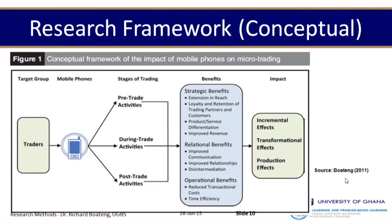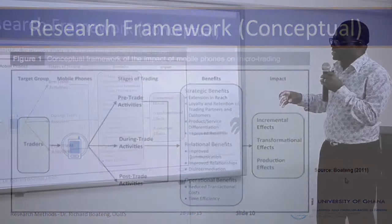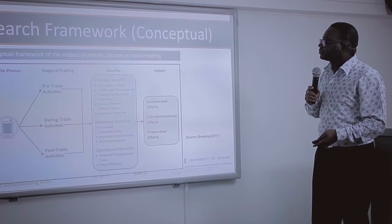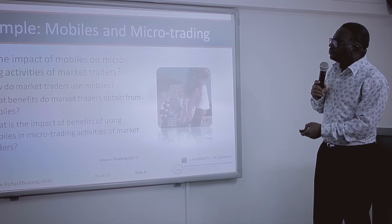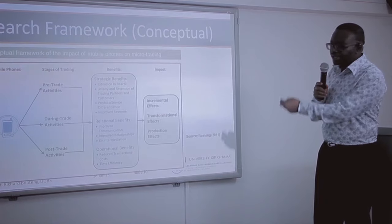A conceptual framework was developed titled 'Conceptual Framework of the Impact of Mobiles on Microtrading.' The framework argued that a trader will adopt a mobile phone and then use it in three ways: pre-trade activities, during-trade activities, and post-trade activities. This generates three types of benefits: strategic benefits, relational benefits, and operational benefits. And these lead to three types of impact: incremental impact, transformational impact, and production effects.